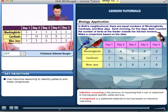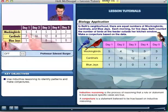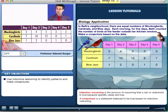Here is the data that Beth collected. You can see day one, day two, day three, day four, day five, and the various birds and the number. For example, there were five mockingbirds on day one, seven cardinals on day one, and one blue jay on day one that ate from her feeder.